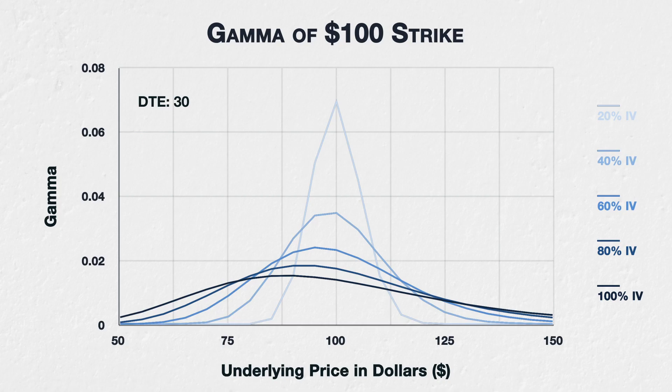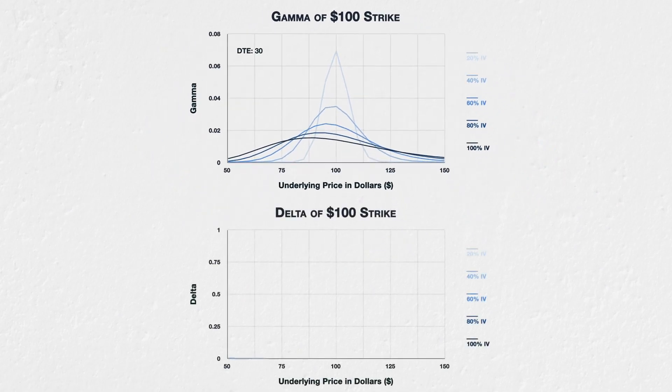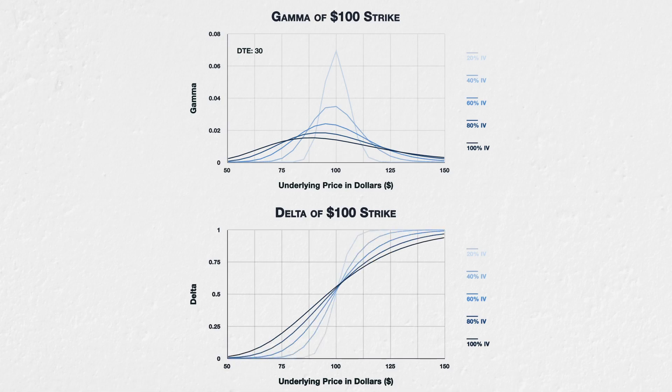If we compare this gamma chart to a chart of the corresponding deltas, we can understand why we see these patterns. This is a chart of the corresponding deltas — all parameters are exactly the same, except the delta is displayed instead of the gamma. Remember, the gamma is simply the rate of change of delta, so the gamma chart is telling us how steep the corresponding line on the delta chart is.